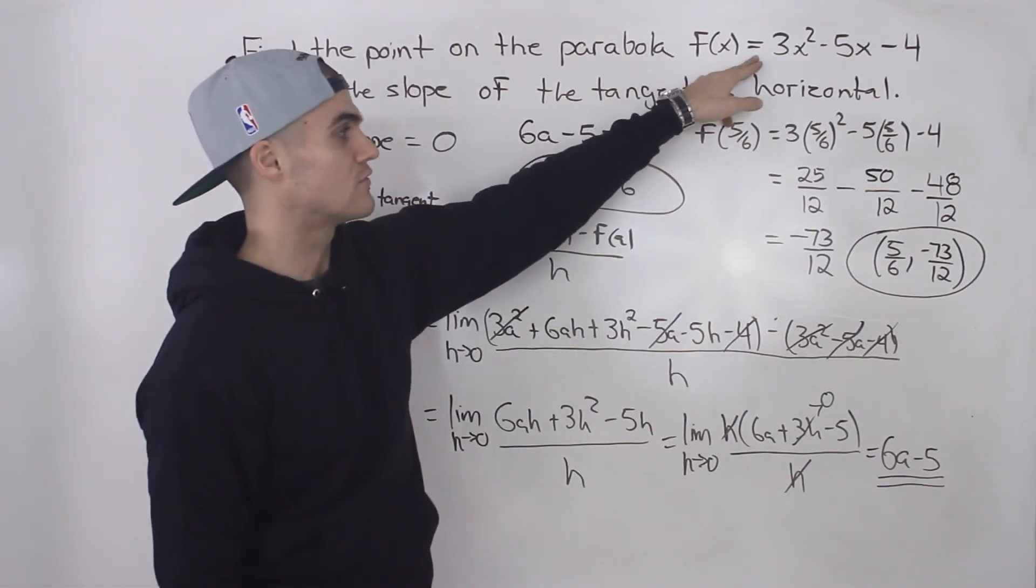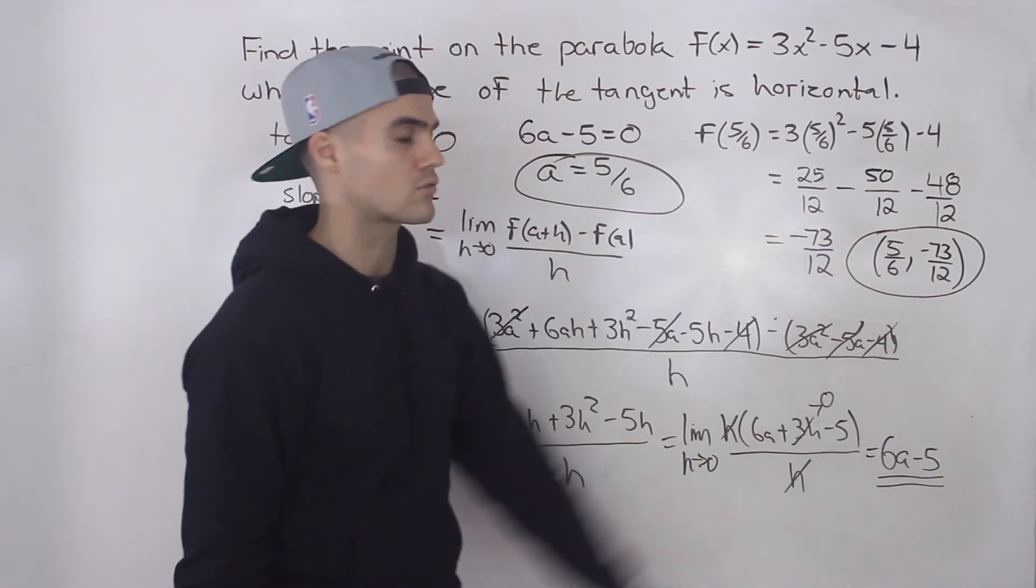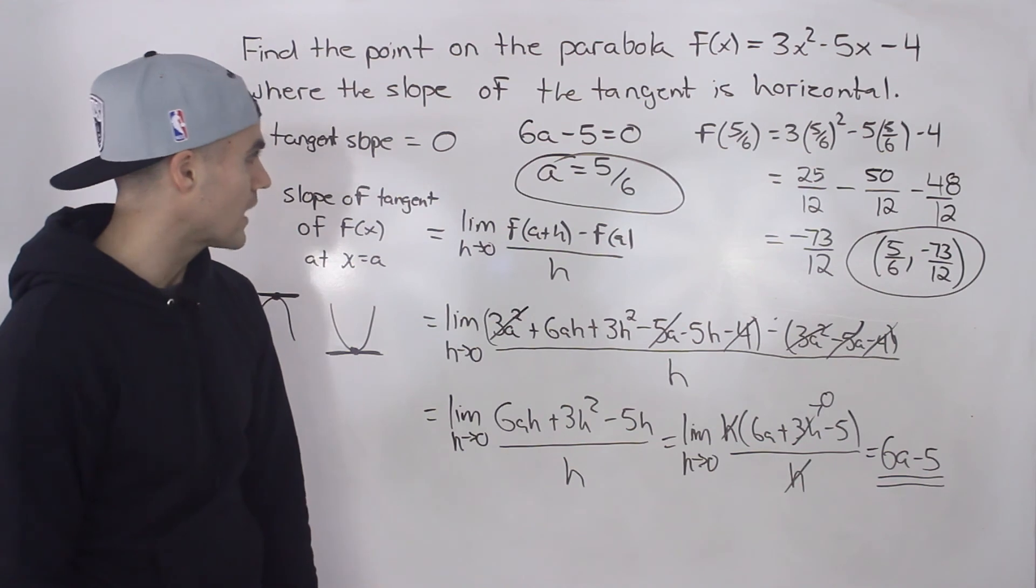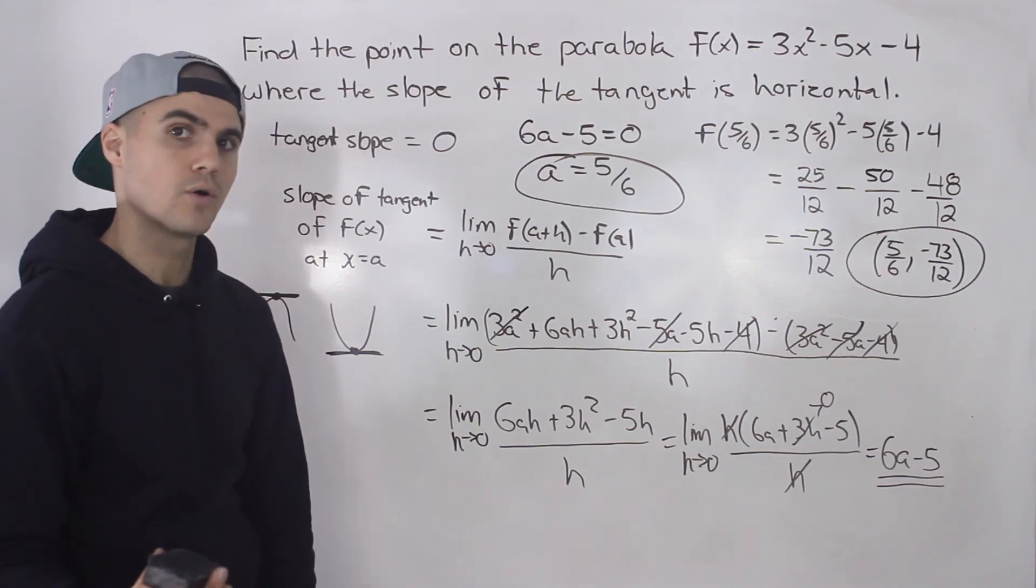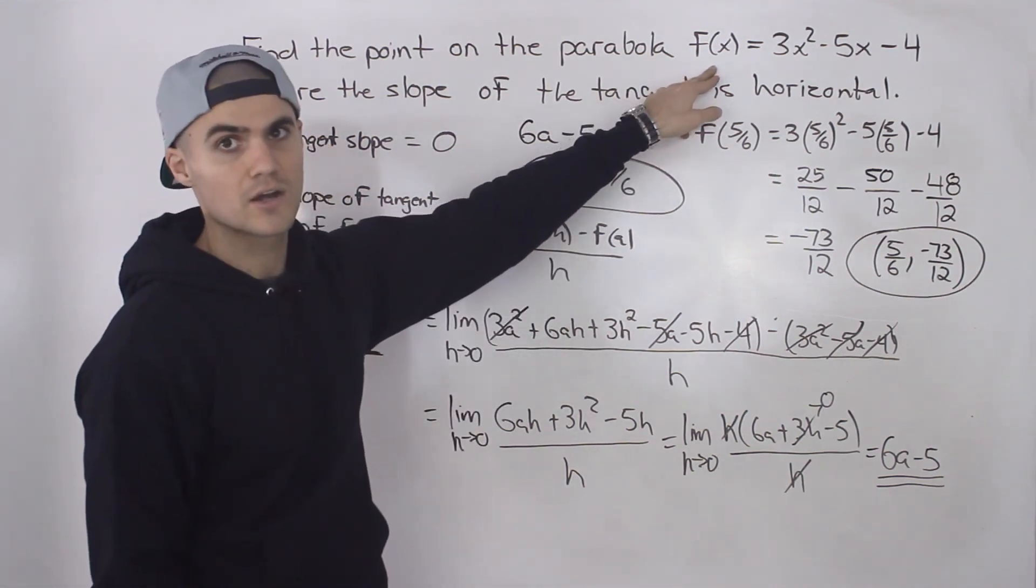So if you get that in vertex form, you would see that the vertex is equal to this, 5/6, -73/12. However, I don't recommend doing it that way because that's only going to work for a parabola. What if you get a function that's not a parabola?